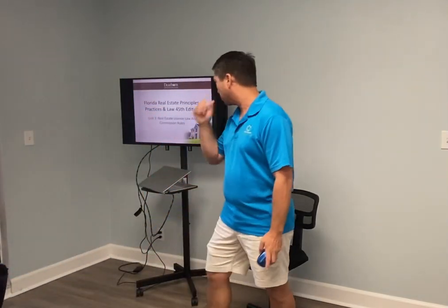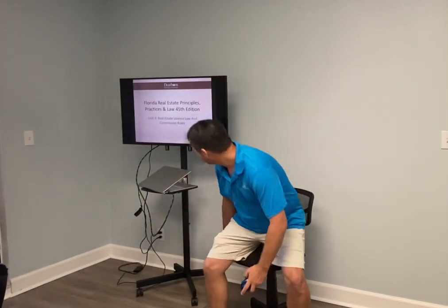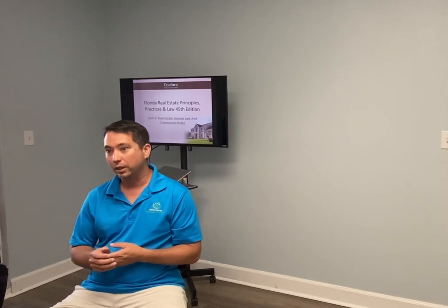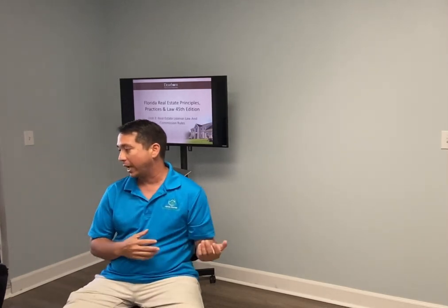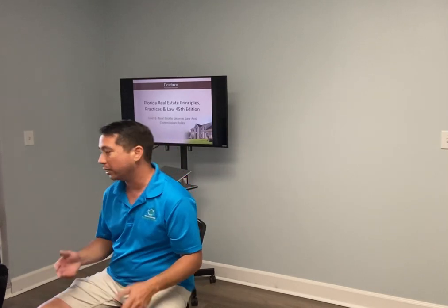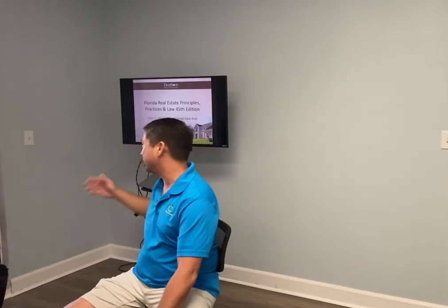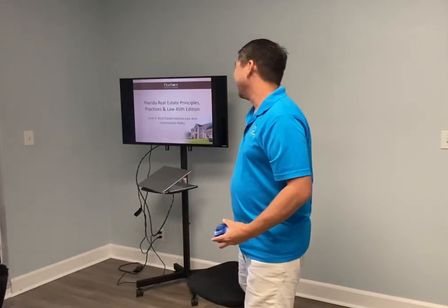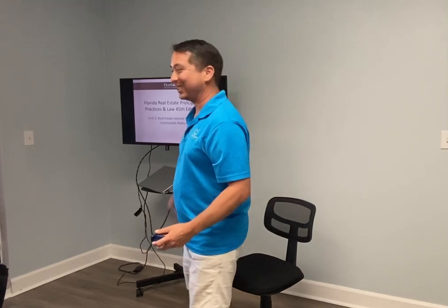Chapter 3 is real estate commission rules and license law. It's going to be your foundation — what we can do, what we can't do, how many licenses you can have. It describes the functions of the Department of Real Estate and the Department of Business, distinguishing between active and inactive status. You're going to see a lot of overlap from one topic to the next.